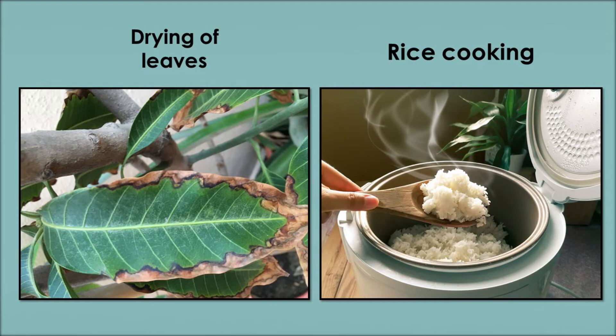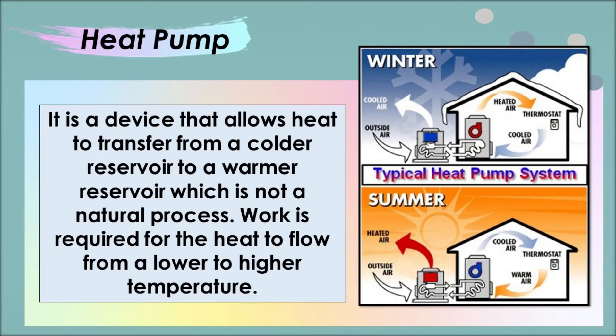Drying of leaves is an example of a spontaneous process because it is a natural process and does not require any mechanical energy. Next, we have rice cooking. Rice cooking is an example of non-spontaneous process because it requires mechanical energy for it to happen. Now that we have known that every non-spontaneous process needs work or mechanical energy enabled to reverse the process, it is about time for us to find out how heat pump functions.